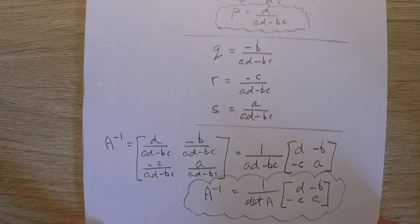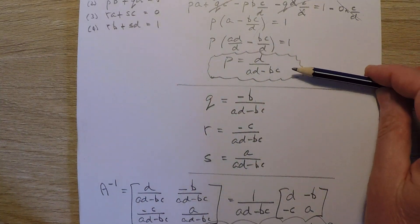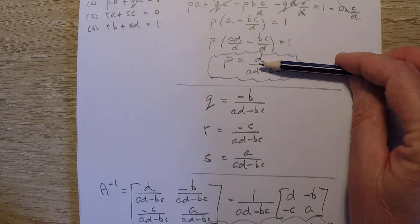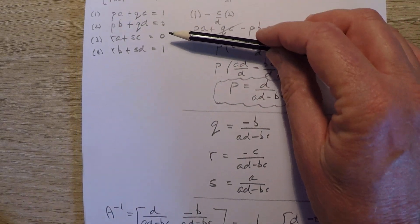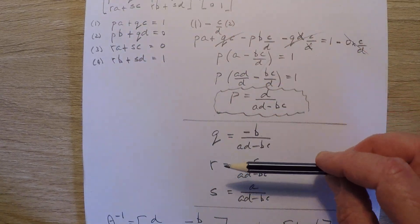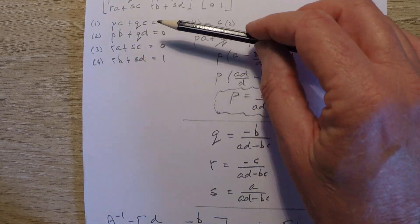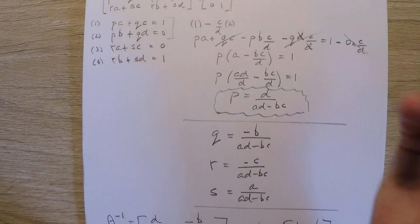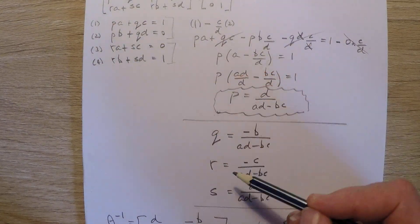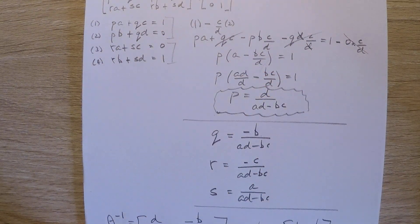So that's the process to find the first element. And you could easily follow the similar process with these equations that we wrote to eliminate and solve for Q and then R and then S. So you'd use the first two here to solve for Q and you'd use the third and the fourth one here twice. Once to solve for R, once to solve for S.